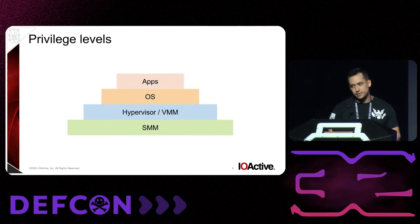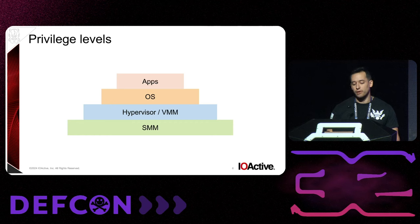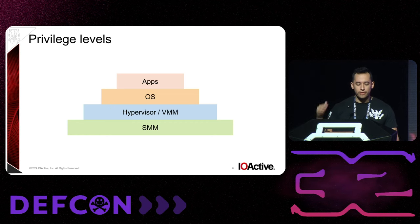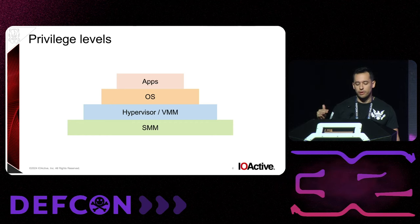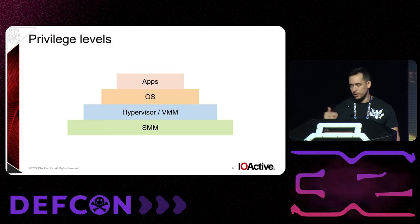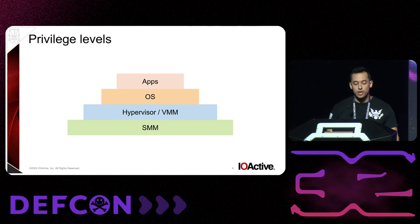In terms of privilege level, this is just a simplification, but we can think about it like this. We have our applications, like our browser, running at the very top of Ring 3. Then we have our OS at Ring 0, and if we have a hypervisor, it's below the OS, and only then we have SMM.